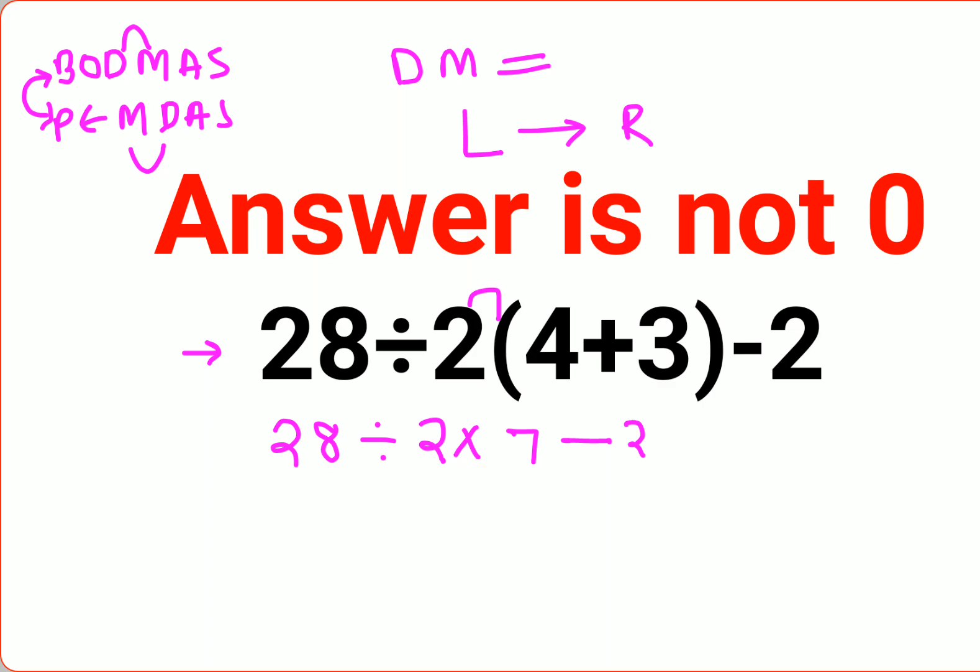So we have 28 divided by 2 that gets you 14 times 7 minus 2. Now the next operation you need to do is 14 times 7 and that gets you 98 minus 2. So the answer comes out to be 96.